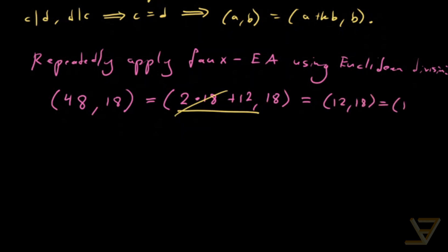And we're just going to flip it over so that the bigger one is on the left side. And now we do 18 divided by 12 in Euclidean division, and we find that this is 1 times 12 plus 6, comma 12. And now we can get rid of this as well because by the Faux-Euclidean algorithm.